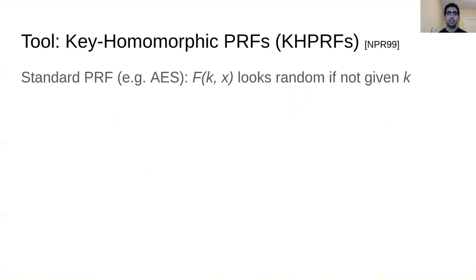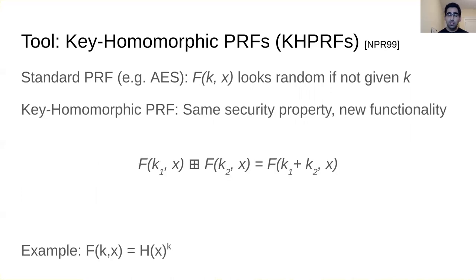The tool we use is a key-homomorphic PRF. A standard PRF evaluated at key K and input X looks like a truly random value if you don't know K. A key-homomorphic PRF has the same security property but adds a homomorphism in the key space: F(K1, X) + F(K2, X) equals F(K1 + K2, X). An example in the random oracle model is hashing the message and raising it to the key — multiplying two such evaluations adds the keys in the exponent.